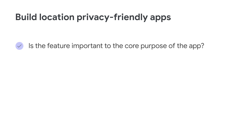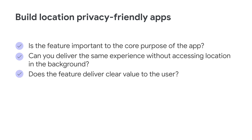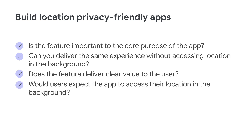First, is the feature important to the core purpose of the app? Second, can you deliver the same experience without accessing location in the background? Third, does the feature deliver clear value to the user? Last but not the least, would users expect the app to access location in the background? Please ask these questions before using the background location permission, and we recommend you submit the application only if you can clearly answer all the questions, because we also use the same set of questions to define the location permission review criteria.